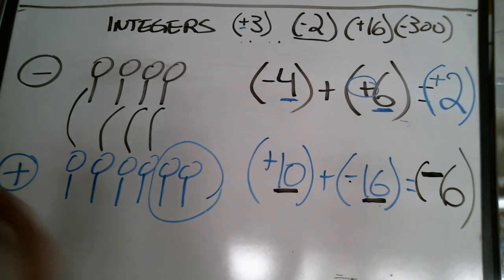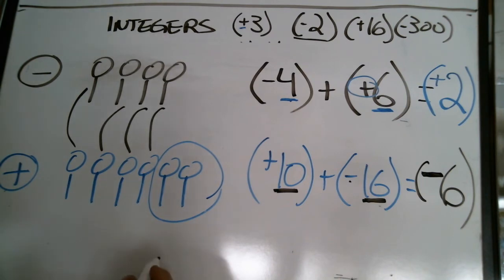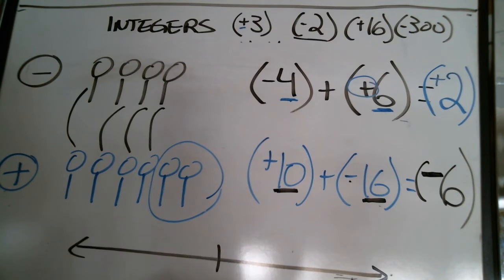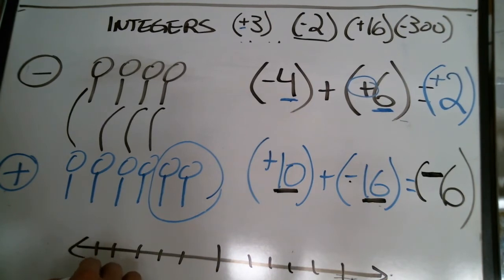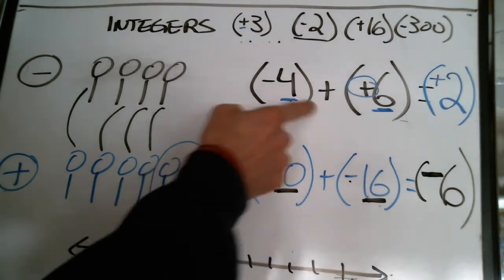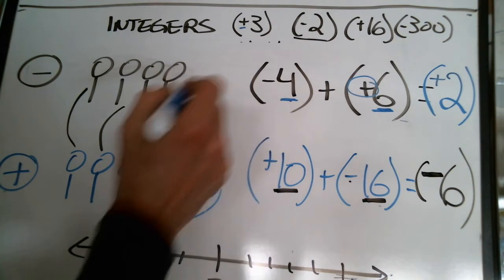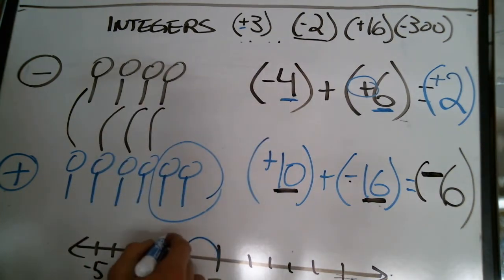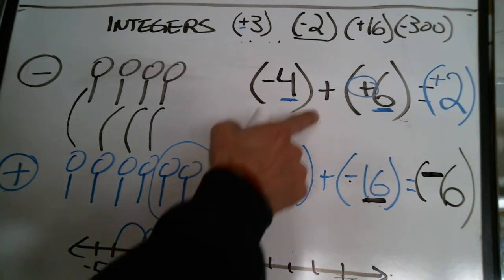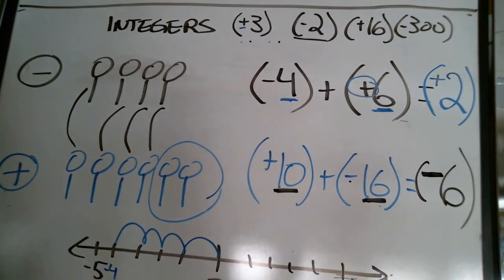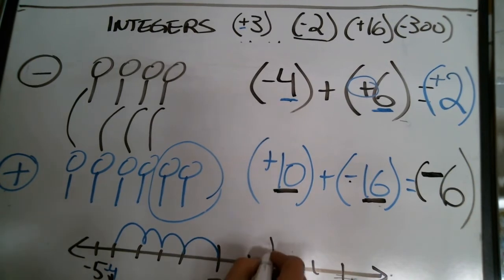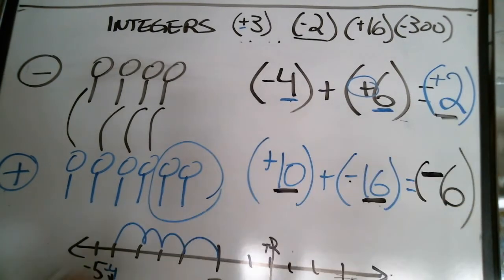That really is the whole idea behind adding and subtracting integers. You can also draw a quick number line — let's go negative five to positive five. Starting with the example: I go back four to the left, landing at negative four. Then I go forward six: one, two, three, four, five, six — I end up at positive two. There's the answer.